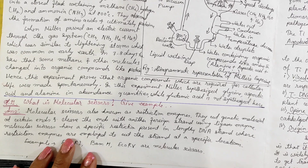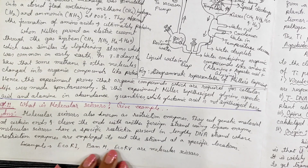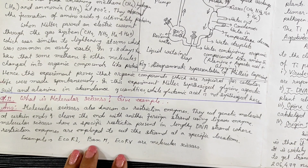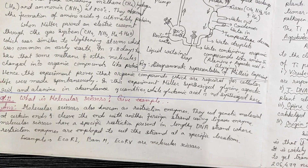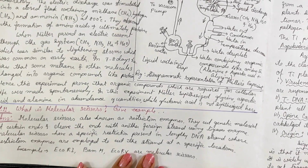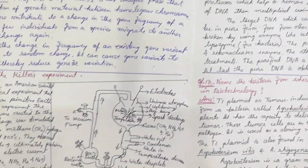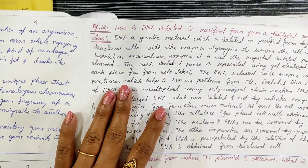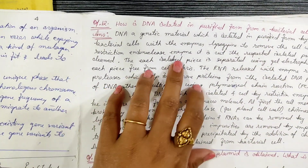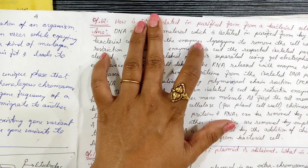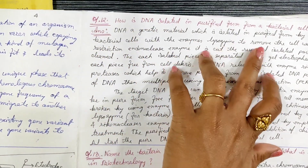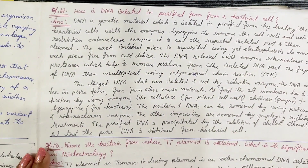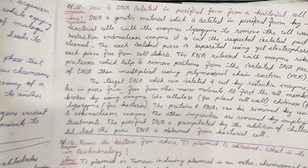Next: molecular scissors — the restriction endonuclease enzyme EcoRI. Next: how is DNA isolated in purified form from a bacterial cell? The bacterial cell is isolated.